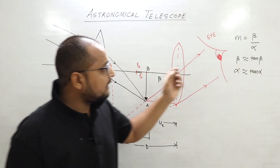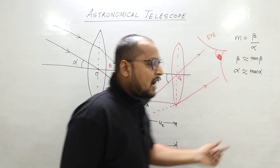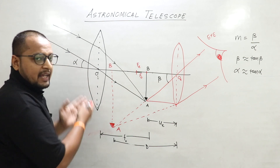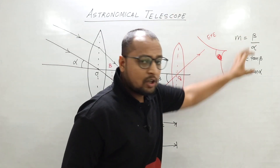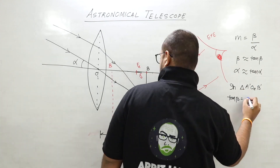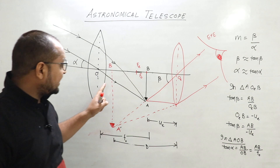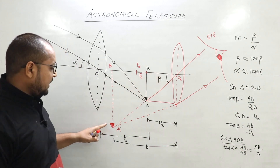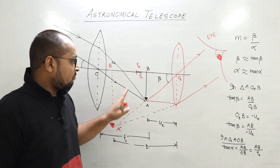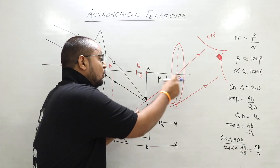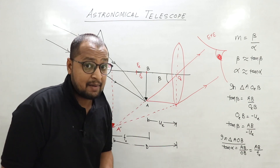Because the angle is small, we are saying that beta is tan-beta and alpha is tan-beta. Now nothing is wrong — just the triangle is left, alpha and beta is left, and the answer is coming. In this triangle, A-OE-B triangle gives tan-beta.